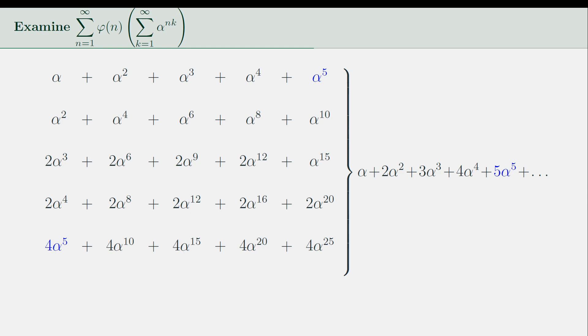So it looks like a pattern. In fact, we can conjecture, and I hereby claim that the double summation is just equal to the sum of m times α^m, where m runs from 1 to infinity.